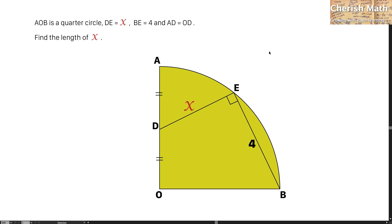Say hi from Travis Math. This is the question. AOB is a quarter circle. DE is equal to X, BE is equal to 4, and AD is equal to OD. Find the length of X.